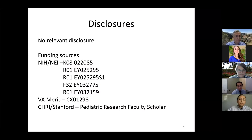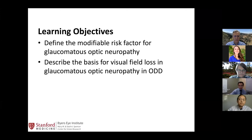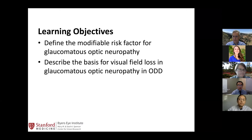I'm not going to be talking about the research that's currently going on because we are getting close to publications — we wanted to make sure we have a solid story. But in today's talk, I will be discussing the risk factors for glaucoma, this optic neuropathy, and the basis for visual field loss.